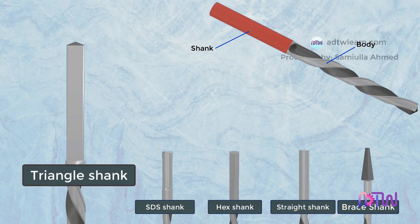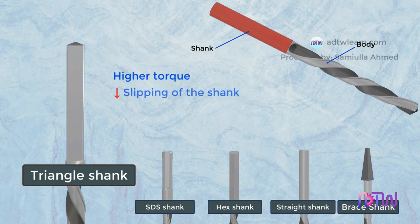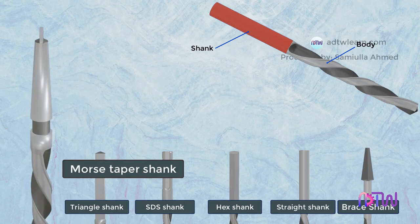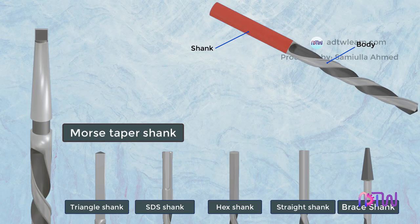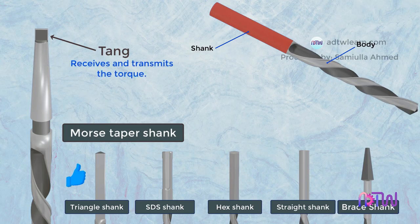Triangle shank: this shank is a minor modification to the straight shank, allowing the transfer of higher torque and reducing slipping of the shank. Morse taper shank: these types of shanks are used for metalworking purposes. It self-locks itself. This part of the shank is called the tang — a flattened structure that receives and transmits the torque.